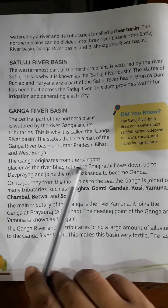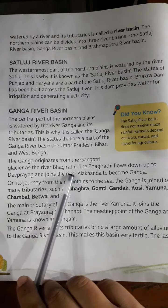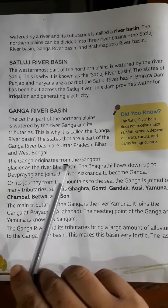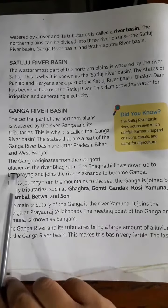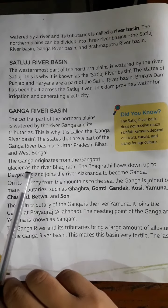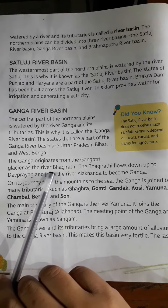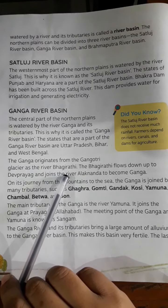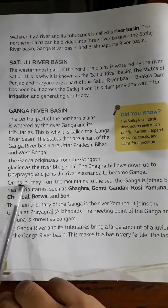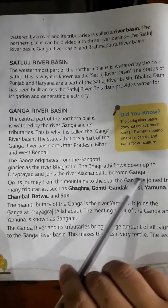The Ganga originates from the Gangotri glacier as the river Bhagirathi. The Bhagirathi flows down to Dev Prayag and joins the river Alaknanda to become the Ganga.